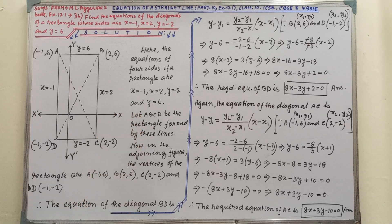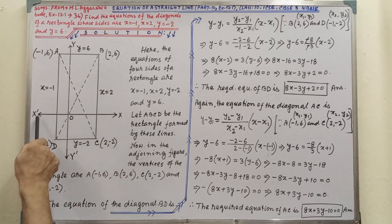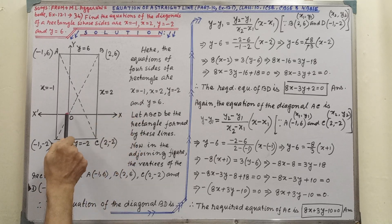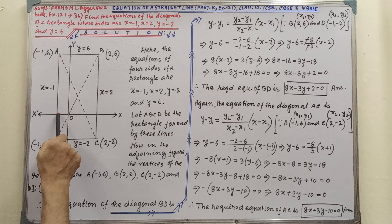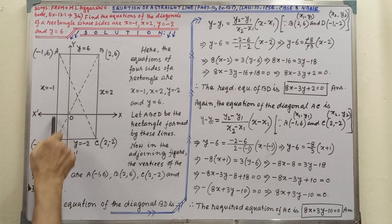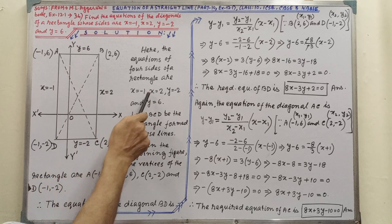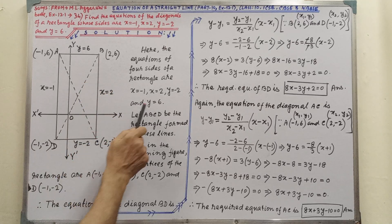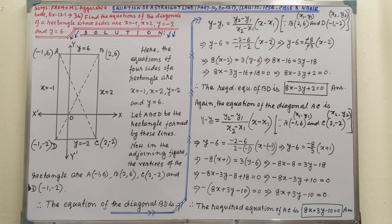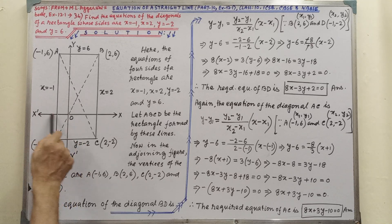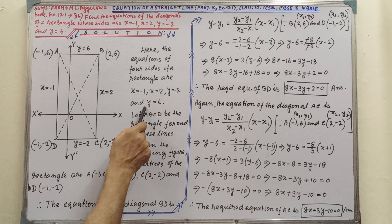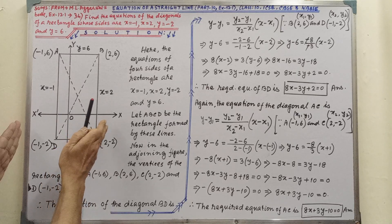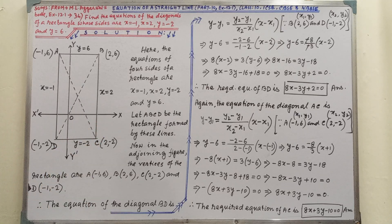The four sides are: x equal to minus 1 and x equal to 2, both parallel to the y-axis. And y equal to minus 2 and y equal to 6, both parallel to the x-axis. In this way you have to draw the diagram, marking the x-axis, y-axis, and origin.